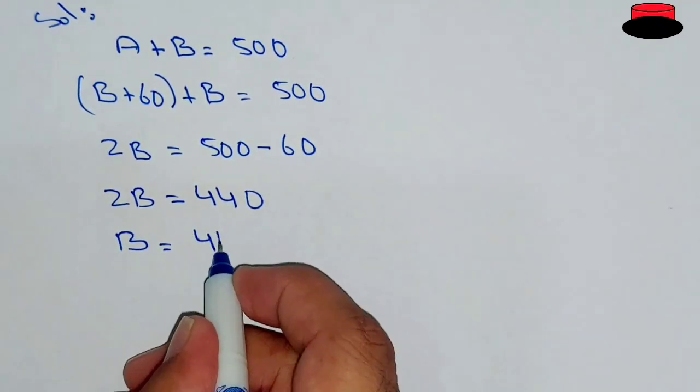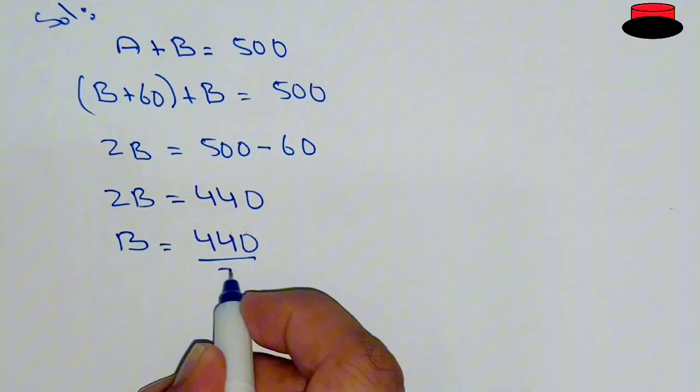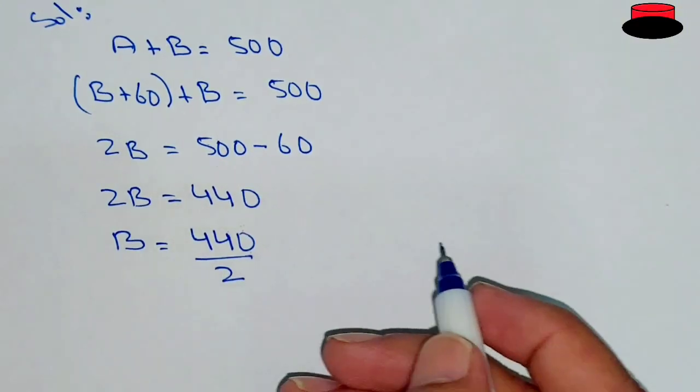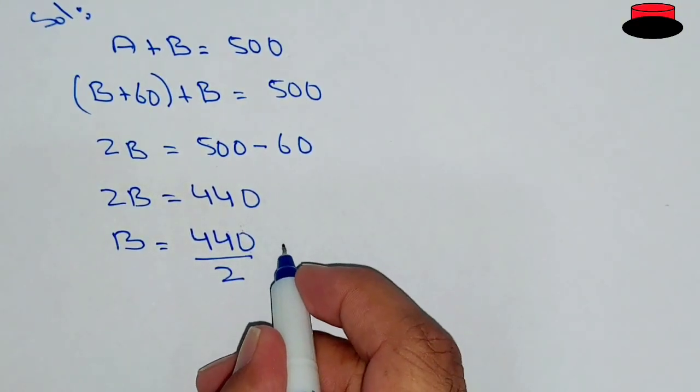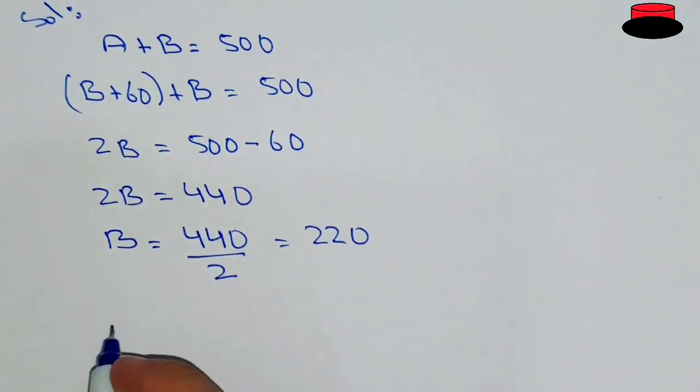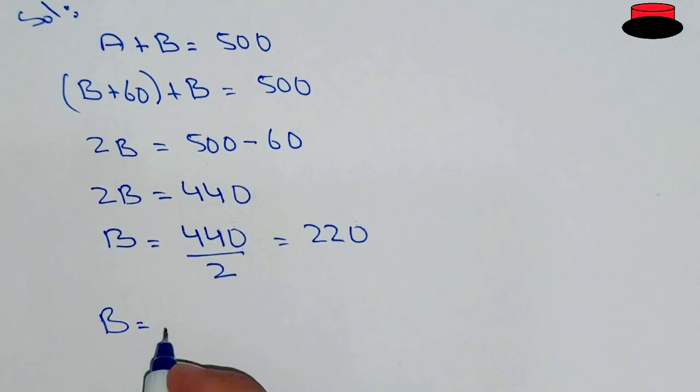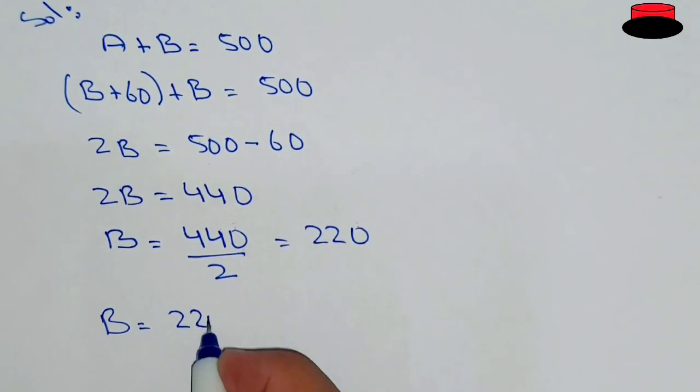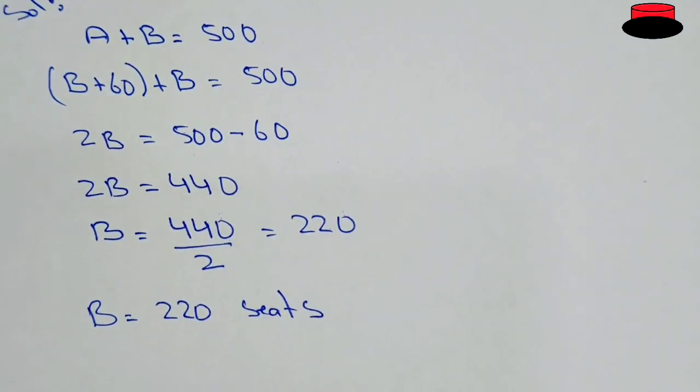So B will be equal to 440 divided by 2. So 440 divided by 2 is going to be 220. So we can say that Plane B has 220 seats.